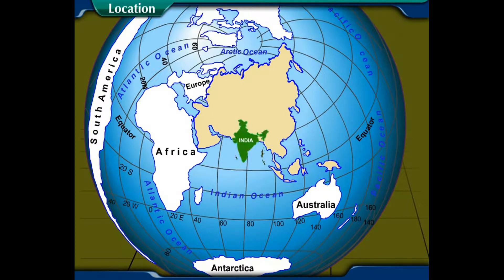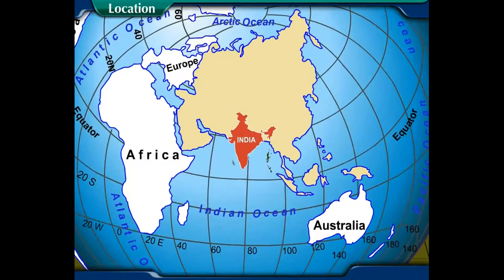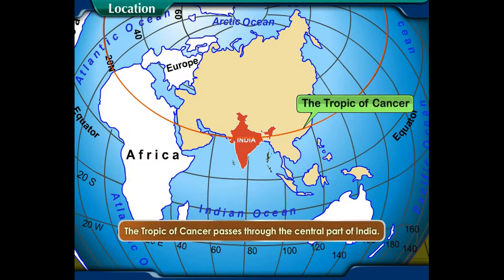India has a central position in the southern part of the Asian continent. The Tropic of Cancer passes through the central part of India.